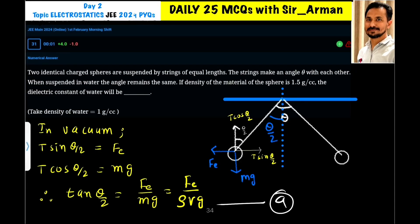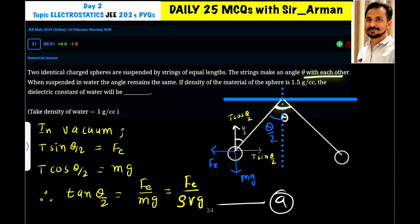Two identical charged spheres are suspended by strings of equal length. The strings make an angle theta with each other, so the angle made by each string with the vertical is theta by 2. When suspended in water, the angle remains the same. The density of the material of the sphere is 1.5 gram per cubic centimeter. First, let us analyze what is happening in vacuum.